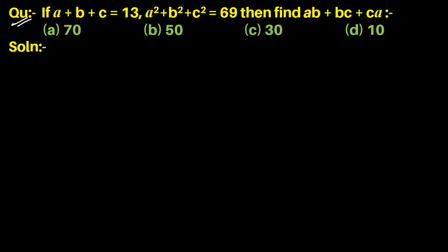Given that a plus b plus c equals 13, and a squared plus b squared plus c squared equals 69, find ab plus bc plus ca.